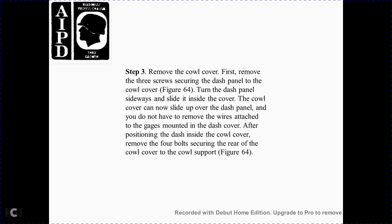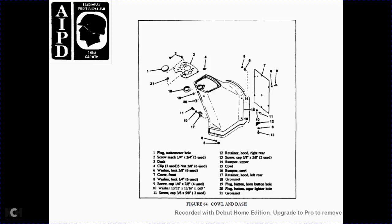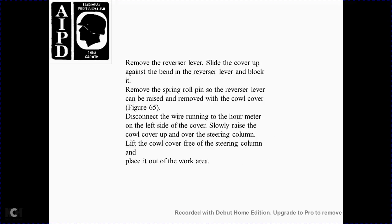Step 3: Remove the cowl cover. First, remove the three screws securing the dash panel to the cowl cover as shown in Figure 64. Turn the dash panel to the side and slide it inside the cowl cover. Now slide the dash panel up over and off. Remove the wires attached to the dash cover. Note the position of the dash, then remove the four bolts securing the rear of the cowl cover to the cowl support as shown in Figure 64. Open the gain for the reverse level block and remove the spring or roll pin from the reverse lever. The cowl cover can then be raised. Note the wire running from the hour meter on the left side of the cover - slowly raise the cowl cover over the steering column.